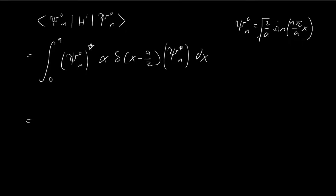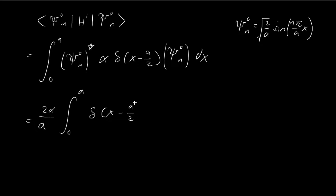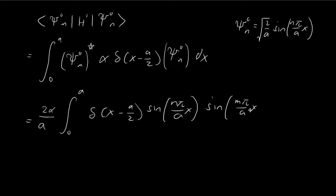We substitute this expression for both stationary state terms and pull out the constants — two factors of square root of 2 over a. So we have 2 over a, and then the constant alpha, and we're left with an integral: delta(x minus a over 2) times sine(n pi over a times x) times sine(m pi over a times x) dx.